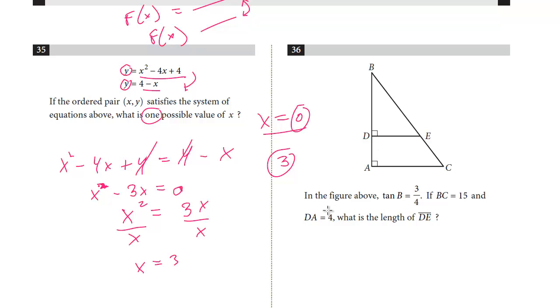All right. Let's take a look at 36. In the figure above, the tangent of b equals 3 fourths. If BC equals 15 and DA equals 4, what's the length of DE? There might be one trig question on the exam. It's usually just a basic SOHCAHTOA. So here, the tangent of b, here's b. The tangent of b is 3 fourths. And whenever you see this type of question, think about SOHCAHTOA.